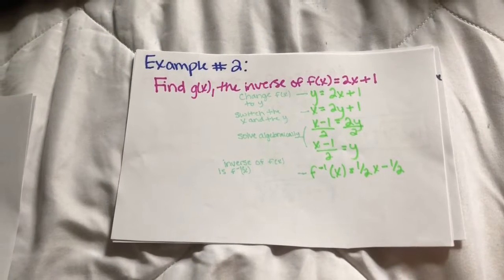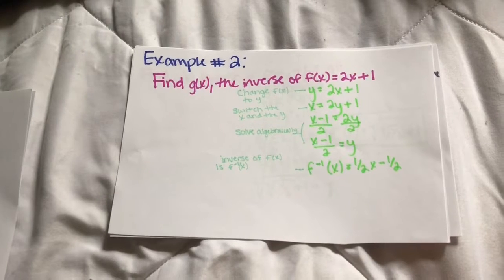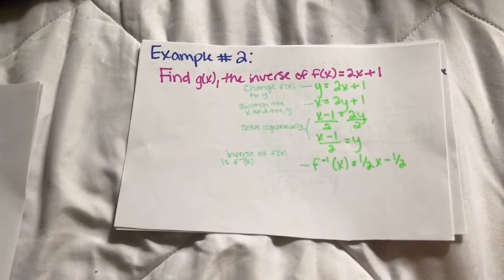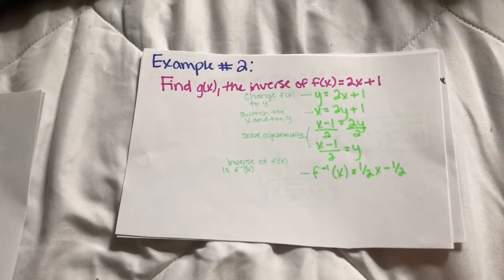So what you want to do first is change the f(x) to y to give it an x and y value. Next, switch the x and y in the problem so you get x equals 2y plus 1. This is important because you are finding the inverse of the function.